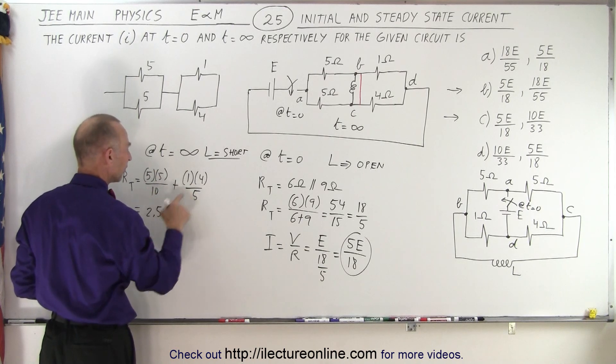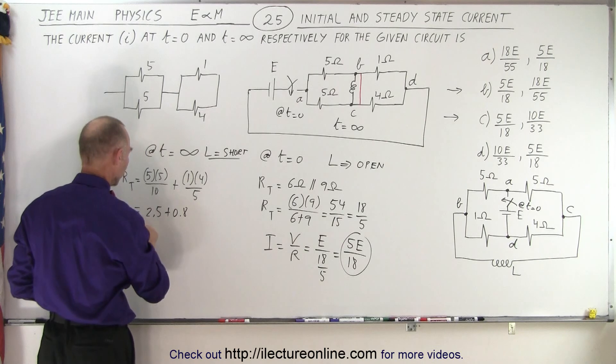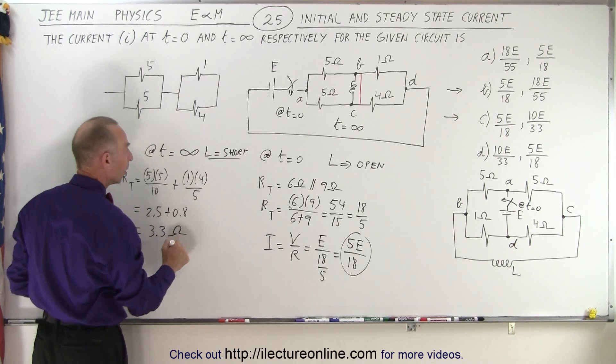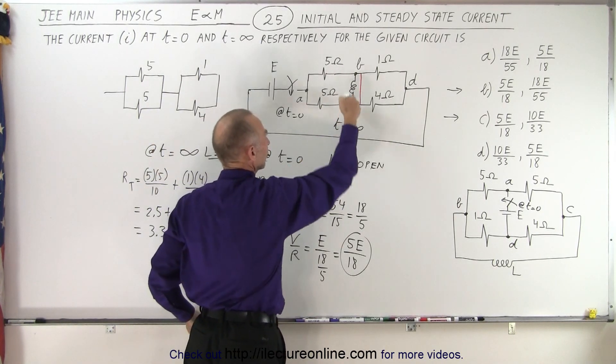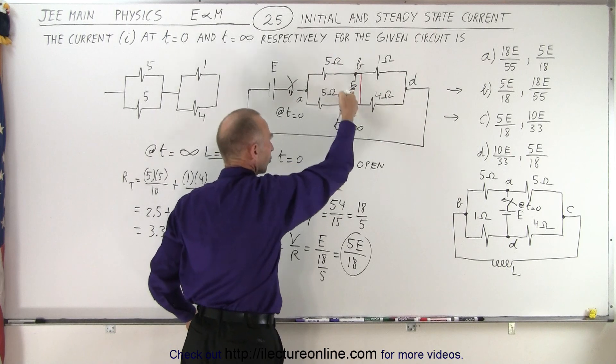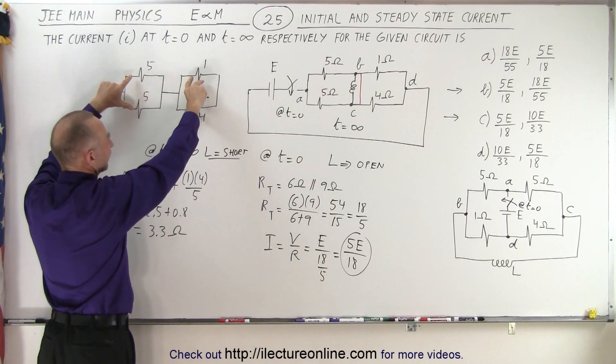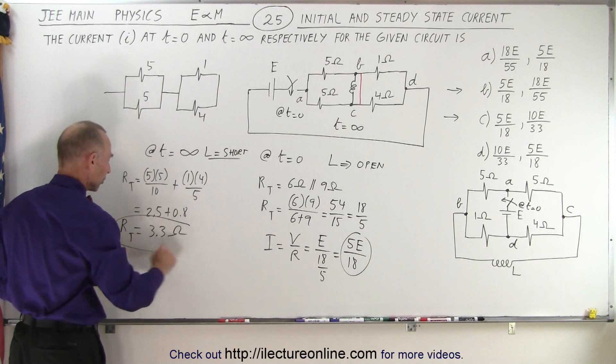So this would be equal to 2.5. So 25 divided by 10 is 2.5 and this is 4 over 5, which is plus 0.8, which is equal to 3.3 ohms. So now when a lot of time has gone by, time is to infinity. We have steady state current. This becomes now like a short circuit, which means that now we have a circuit that looks like this. And that means the total resistance is equal to 3.3 ohms.